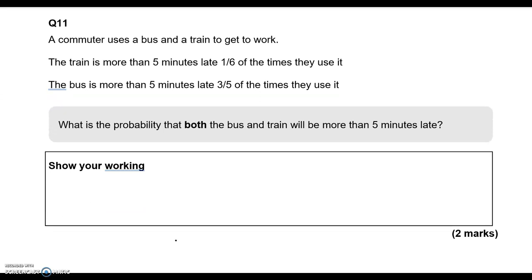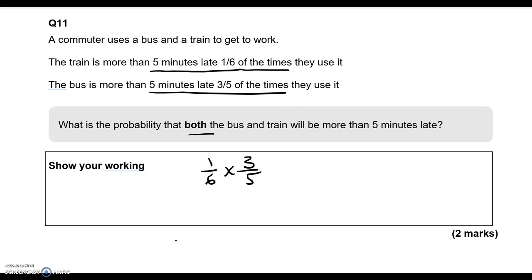Question 11: a commuter uses a bus and train to get to work. The train is more than 5 minutes late 1 sixth of the times they use it. The bus is more than 5 minutes late 3 fifths of the times they use it. To find the probability that both are late, we multiply: 1 sixth times 3 fifths equals 3 over 30, which is 1 tenth.